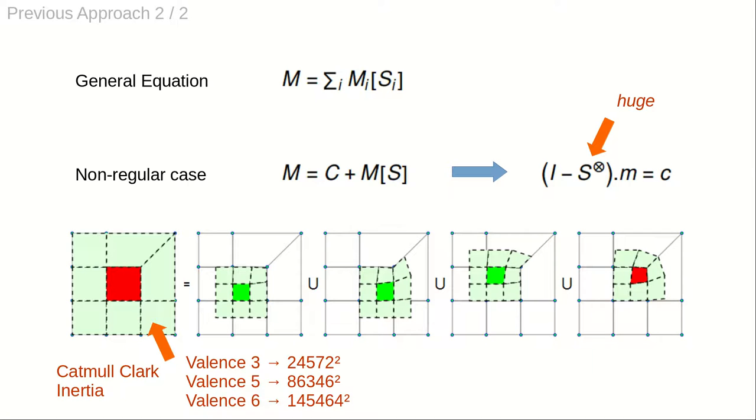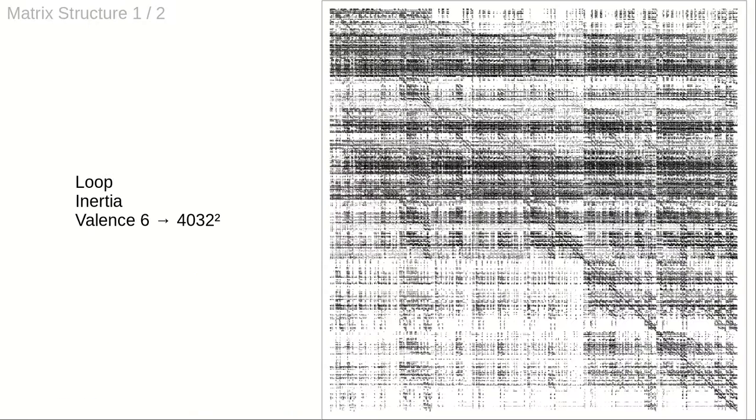The limitations of the mentioned approach originate in the size of the linear system. For instance, the inertia form for a Catmull-Clarke valence 3 patch results in a matrix of dimensions 24k squared. Additionally, the matrices are non-sparse.